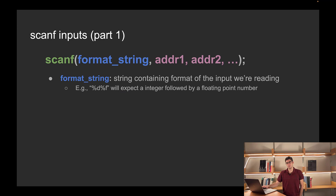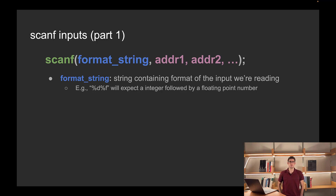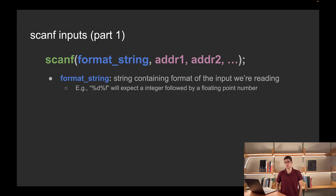Let's take a closer look at this format string. The format string tells scanf how we want to read in the values that are entered by the user. Here's an example format string: %d %f. Our conversion specifiers — %d stands for an integer and %f stands for a floating point number. So if we use this format string in scanf, we would first try to read in an integer, and then a floating point number.